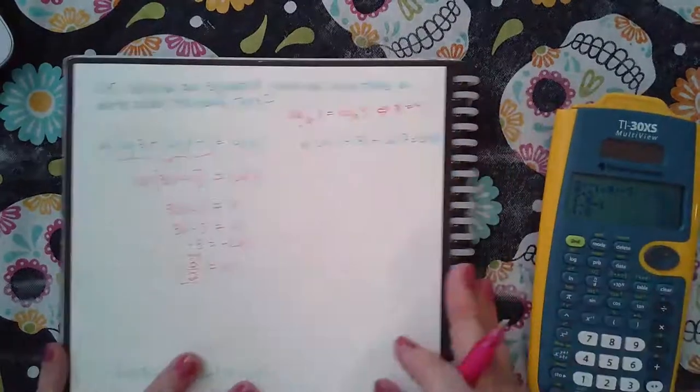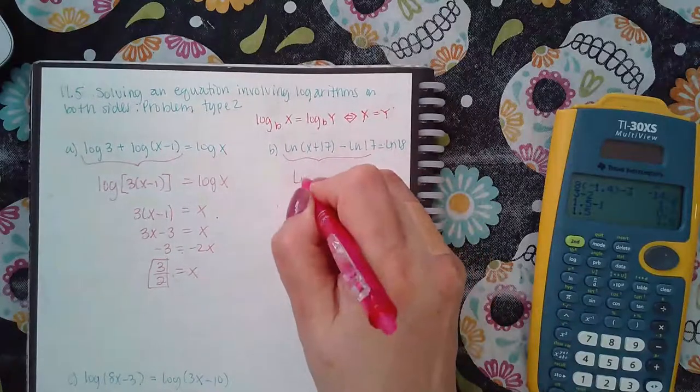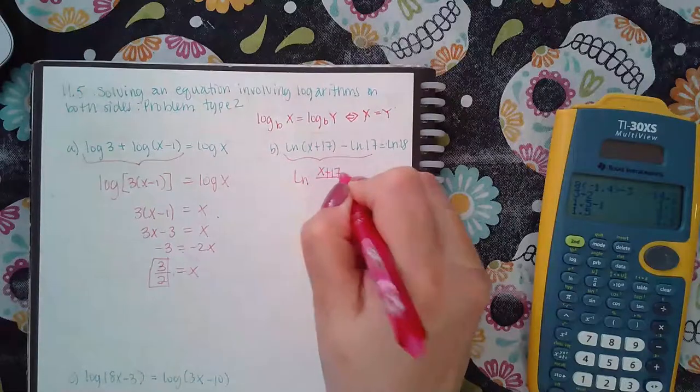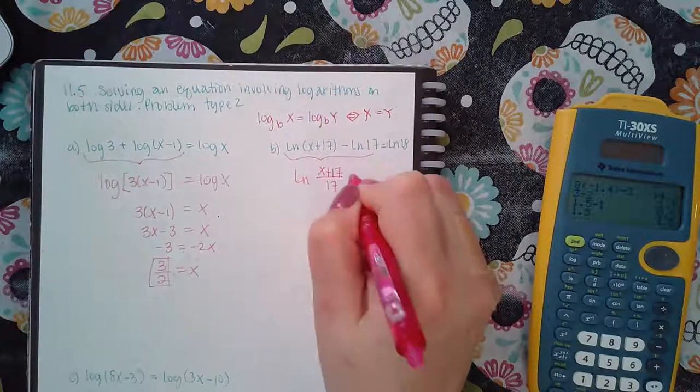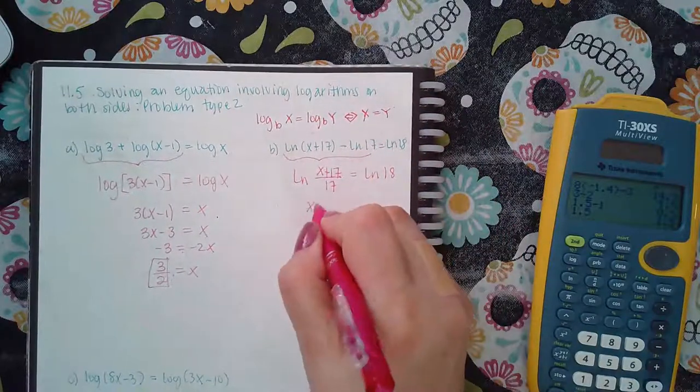Over here we have to combine these, but it's a subtraction, so that means we're going to have division. The first one is x plus 17, and then the bottom is going to be 17. And then in order for this side to equal that side, this argument would have to equal this argument.